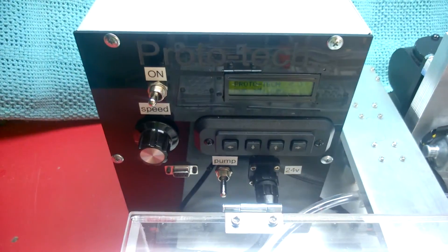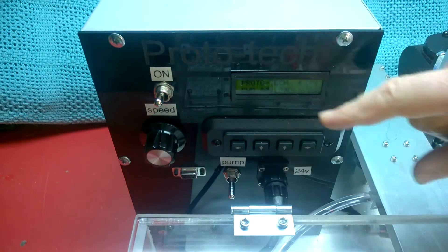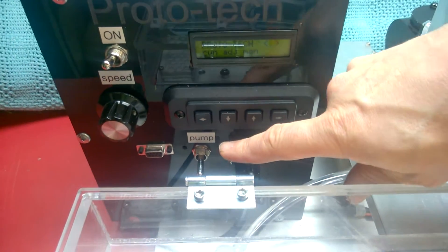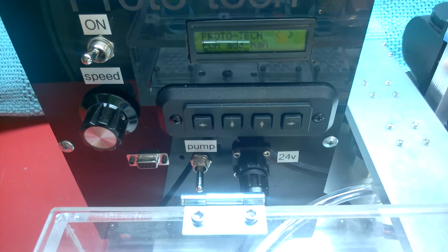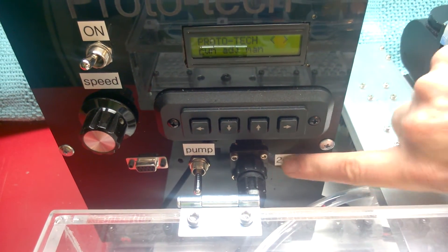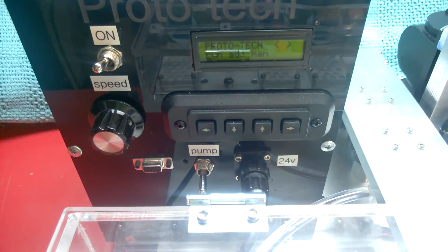Here's the on button. See the speed control. That's for programming. And that's the power to the pump, recirculating pump. Here's an optional 24 volt out to powered brushes.